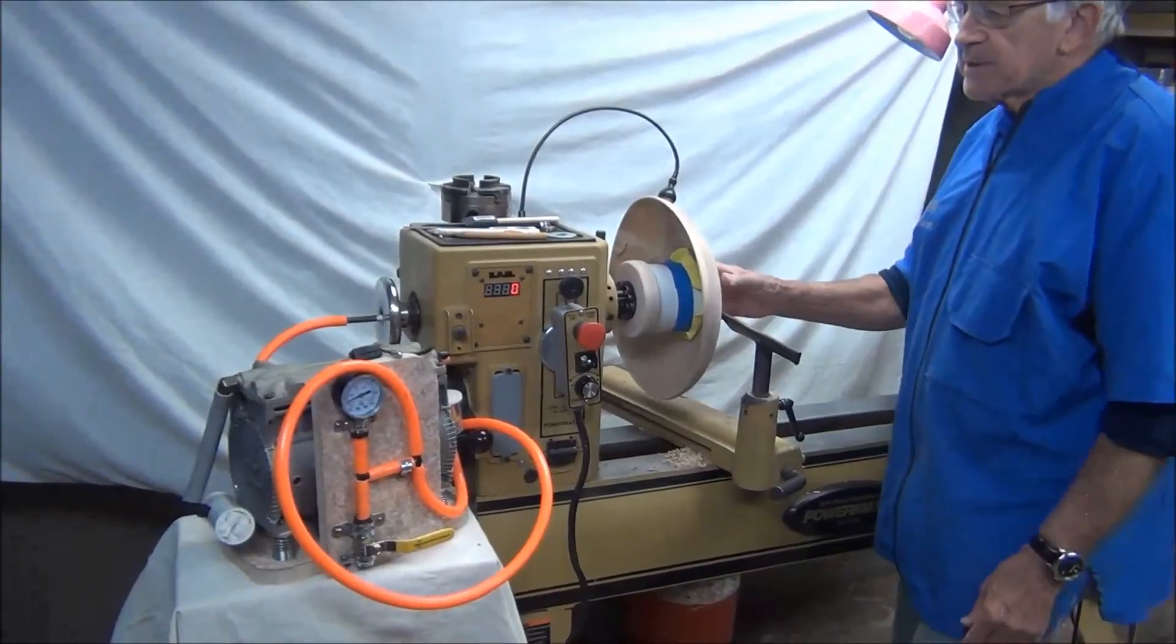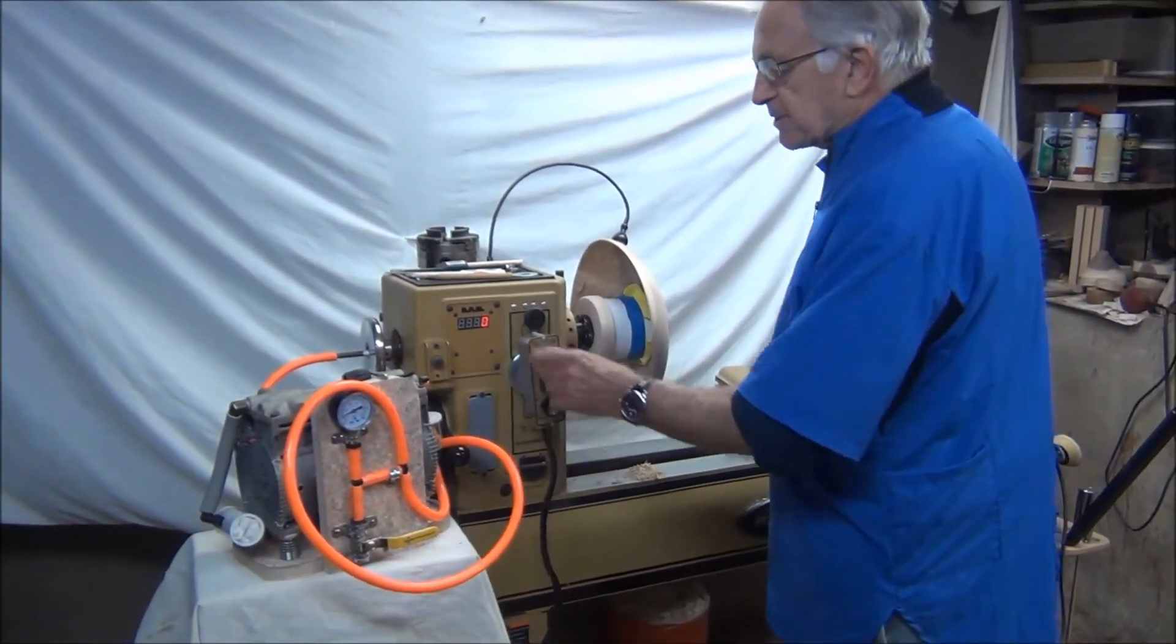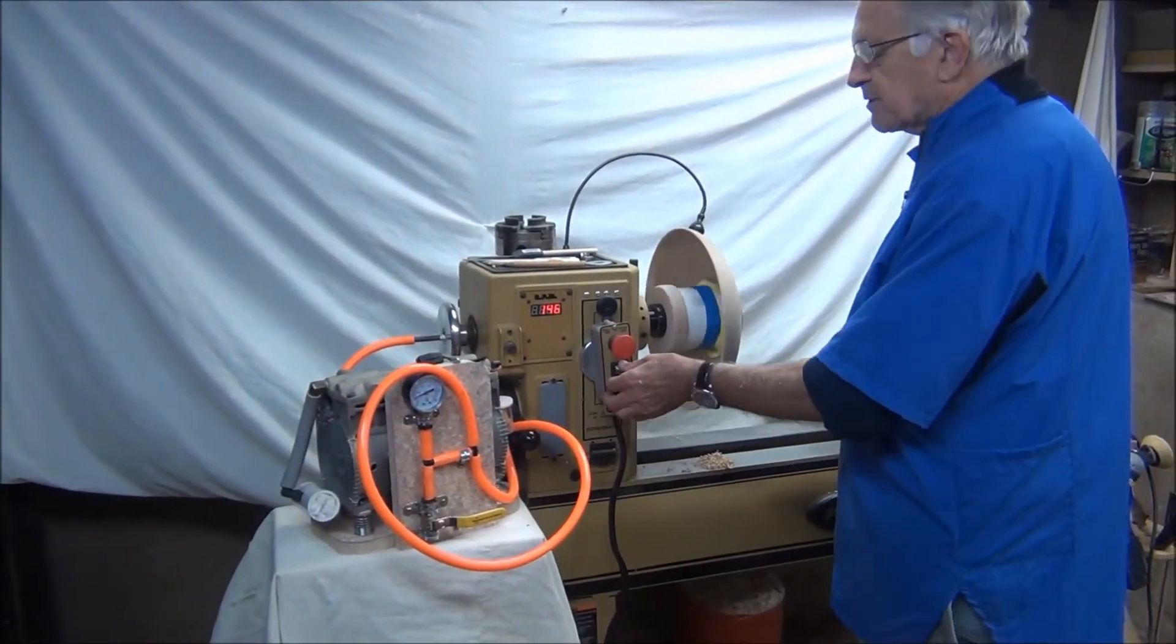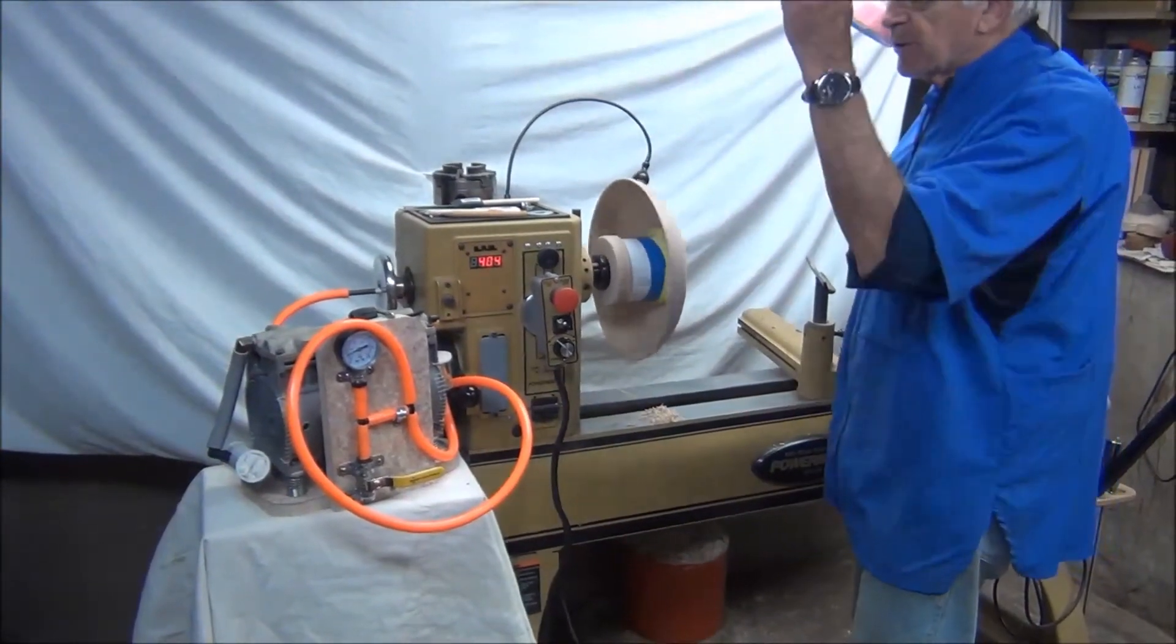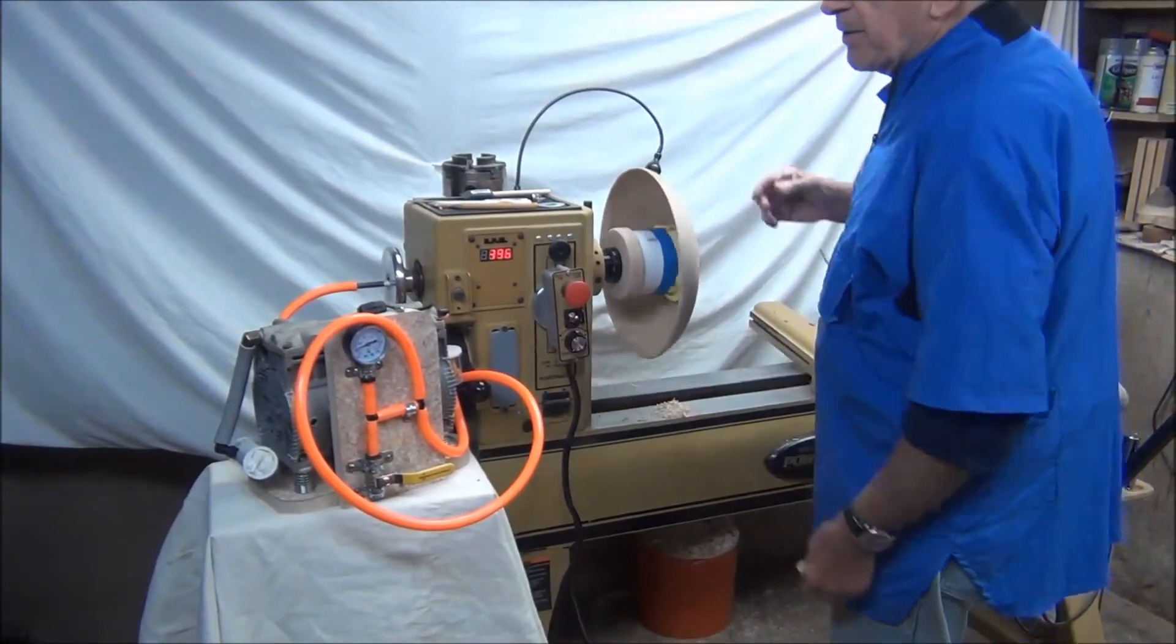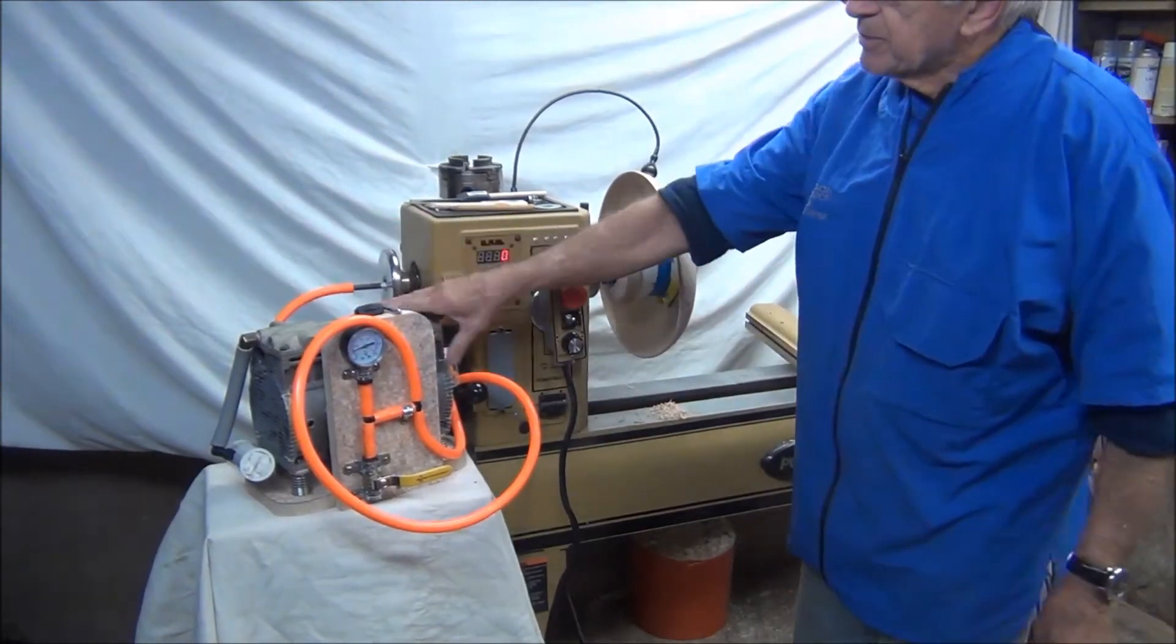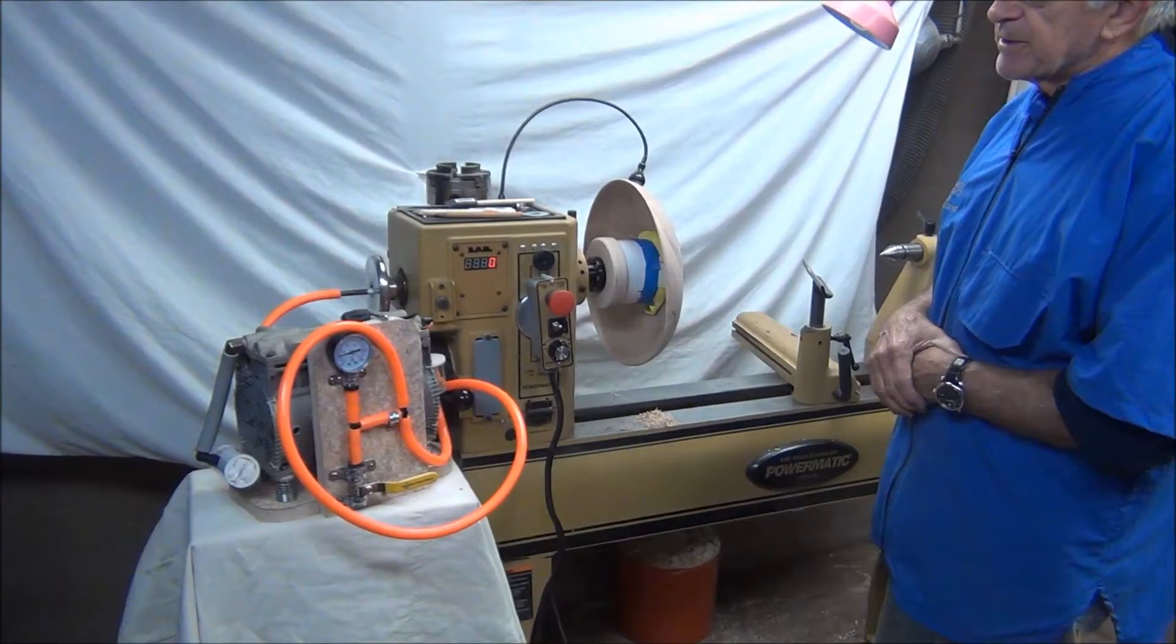People ask what happens if electricity goes off. Is the vacuum going to immediately disappear? Is it going to go flying across the room? Well, let's simulate electricity going off. There we are. Thanks to the really good reed valves inside of here, we got a very slow leak down.